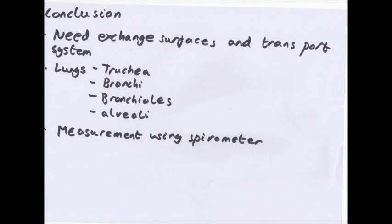In conclusion, we need exchange surfaces and transport systems particularly because large organisms have a very small surface area to volume ratio. We have the lungs for gas exchange, with the trachea, bronchi, bronchioles, and alveoli, and you can measure your lung capacity using a spirometer. Thank you for watching — please comment, like, and subscribe, and if you have any questions email or message me on YouTube.